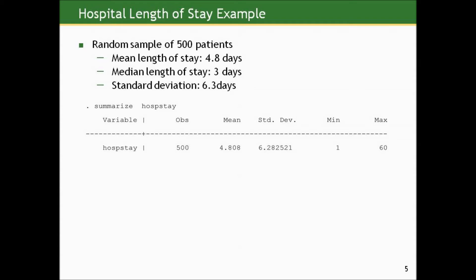And here's a list of some of the values, the first 10 values in the data set in the Stata variable I call hospstay. If we run the summarize command on this data, we get the mean and standard deviation I gave, but we don't get the median.